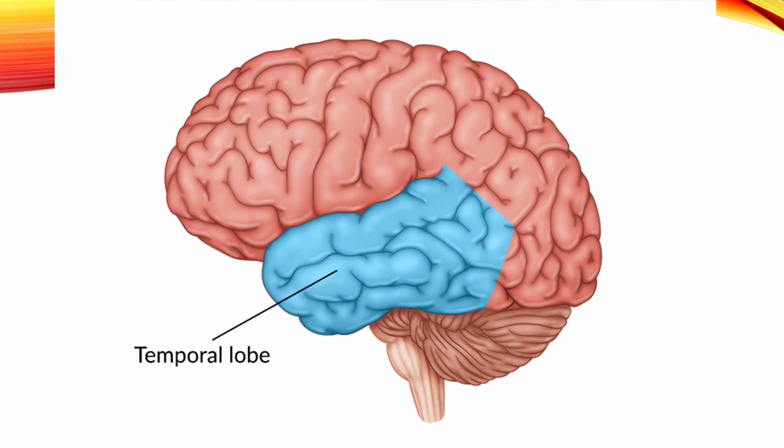Temporal lobe. This lobe is located on the inferior and lateral part of cerebral hemispheres, including the superior, middle, and inferior temporal lobes, as well as the sulci between them.